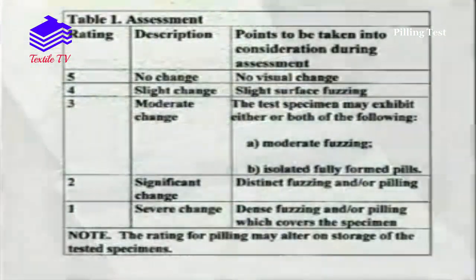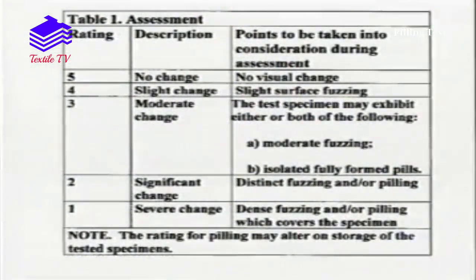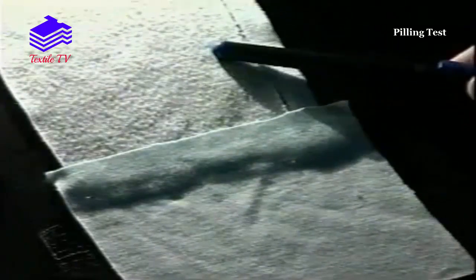Each specimen is assessed for pilling and surface fuzzing under standard lighting conditions against a set of descriptive statements to arrive at a grade on a scale from 1 to 5.